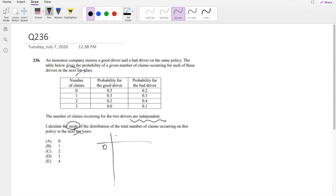So when can it have 0 claims? Well, that's when good driver and bad driver both have 0. So that's going to be 0.5 times 0.2, which is just 0.1. Alright.